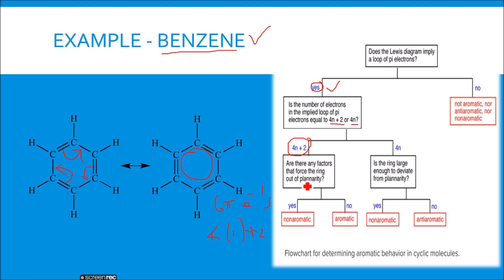Now you have to ask another question: are there any factors that force the ring out of planarity? No. In benzene, you don't have any factor. You don't have any other groups present or something to change or to deviate from planarity. There is no force which deviates the ring from planarity. So the answer is no, and your benzene molecule is aromatic which you get from this flowchart. By these rules, you get it.